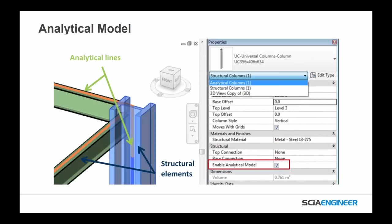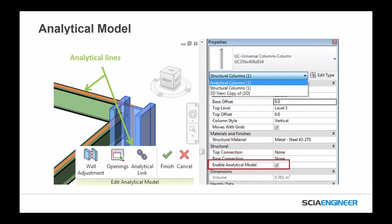Many customers using Revit don't know or understand the analytical model that Revit has. In short, all structural model objects within Revit have an associated analytical model — as long as the enable analytical model checkbox is active, this analytical model exists. This analytical line may need to be adjusted before an exchange between Revit and analysis software occurs. Revit has some basic analytical model tools to adjust various properties, including 1D member end extensions, openings, and analytical line alignments.